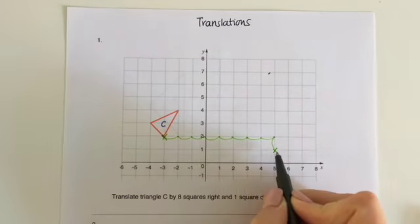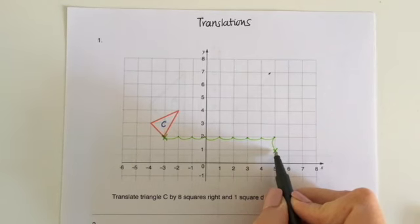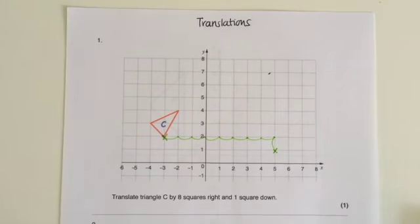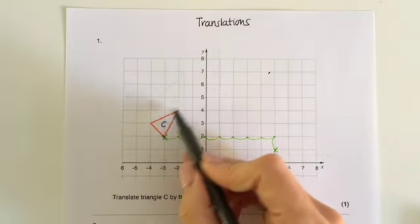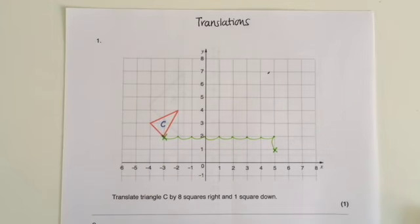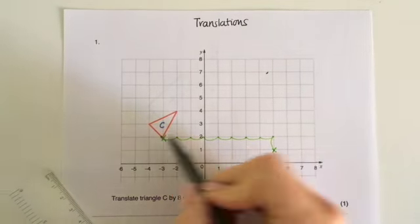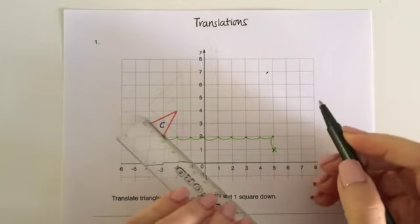So this corner now is going to be here. I could do the same from every other corner if it helped. But what I know is that if I redraw the shape, or if I traced it, I could put that corner on there and I could redraw the shape.